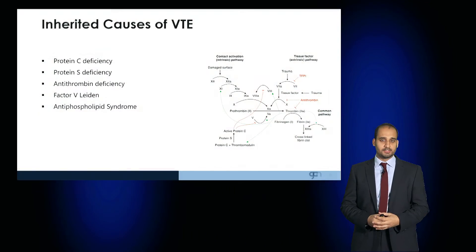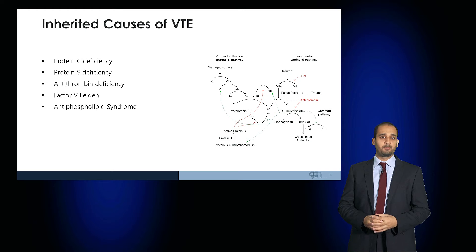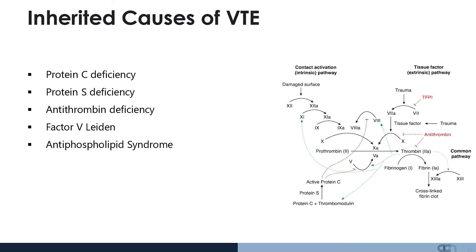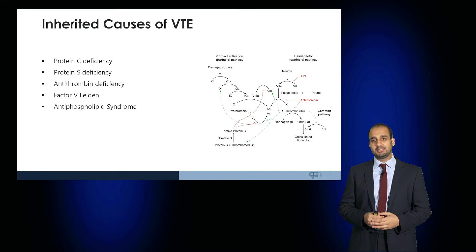Welcome to this Medicine Masterclass on inherited thrombophilias. Inherited causes of venous thromboembolic disease include protein C deficiency, protein S deficiency, antithrombin deficiency, factor V Leiden, and antiphospholipid syndrome.